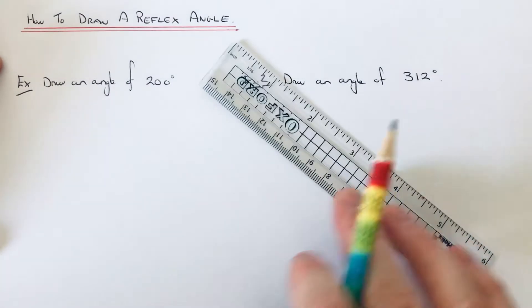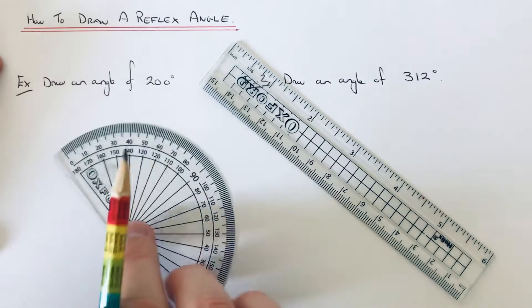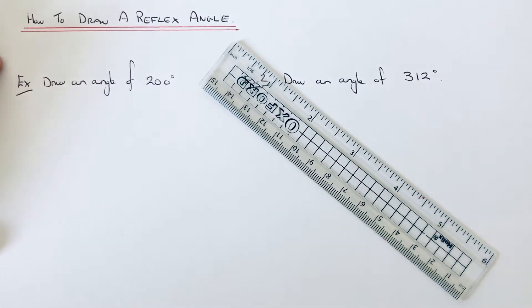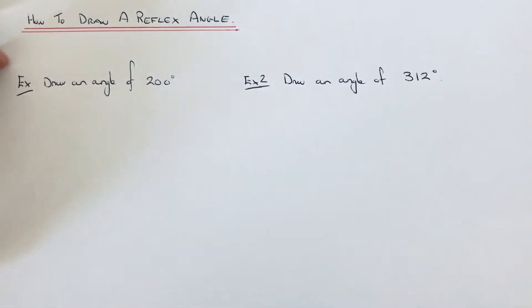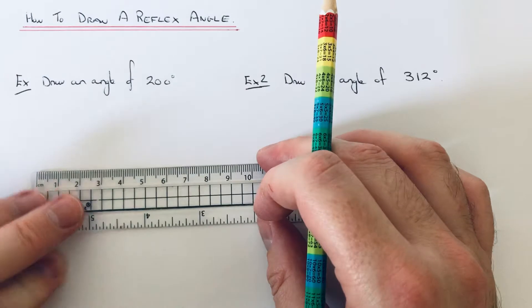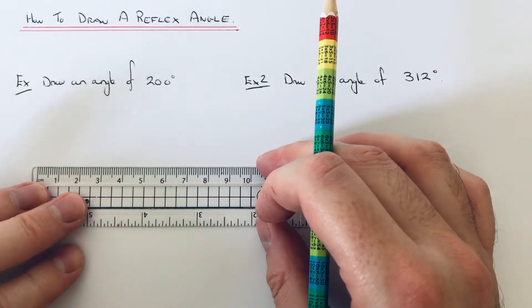We're going to use a ruler and a normal protractor which goes from zero around to 180. So the first thing we want to do is draw a baseline to measure my angle from.